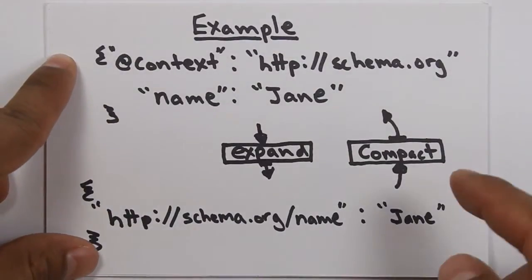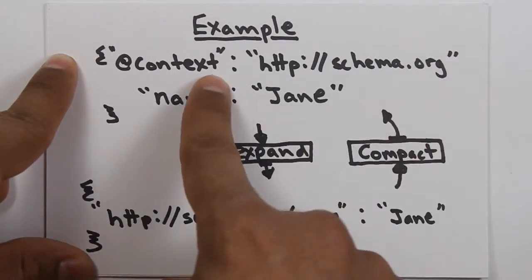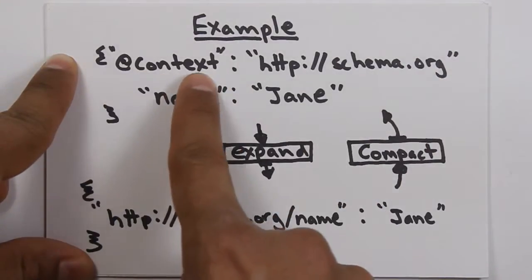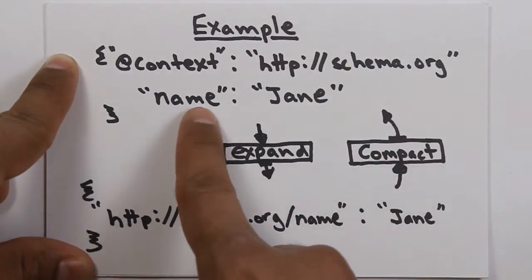So, let's look at an example of expansion and compaction. Let's say we start off with this document here. We've got a context, a JSON-LD context, which is schema.org, and we've got a simple piece of data, name, Jane.